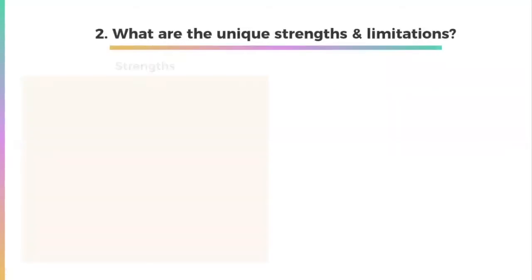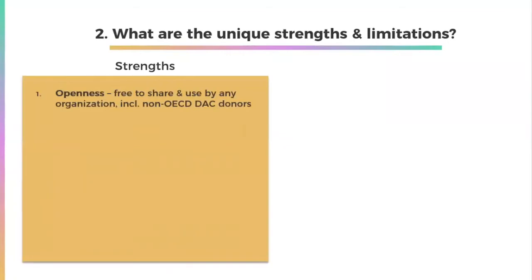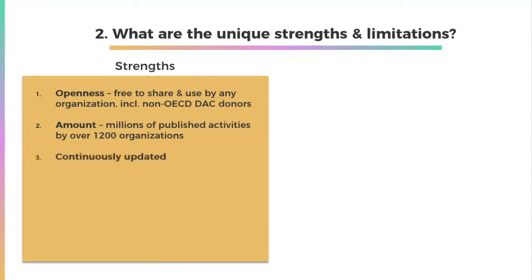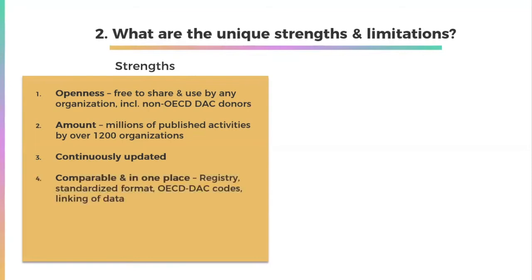IATI has many unique strengths. Its openness: IATI data can be published and used for free by any organization, including non-OECD DAC donors. The amount of data: in 2018 there were between 1 and 2 million published development activities, and today over 1,200 organizations have published activities to IATI. It's continuously updated — organizations can update their activities anytime, and many do on a quarterly or monthly basis. It's comparable and available in one place, starting with the IATI registry. The standardized format allows you to compare different organizations' data, and IATI has integrated OECD DAC codes, which means its data can be compared with OECD DAC data.